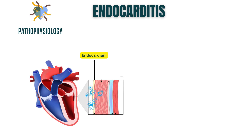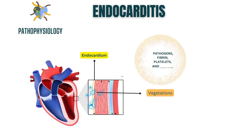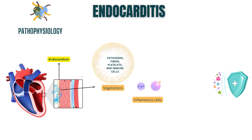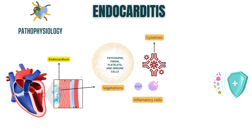Adhering to these vulnerable surfaces, they form masses known as vegetations, composed of a mix of pathogens, fibrin, platelets, and immune cells. As the battle intensifies, our immune system springs into action. Inflammatory cells, like neutrophils and monocytes, rush to the scene. They release powerful chemical signals called cytokines, sparking an inflammatory storm.